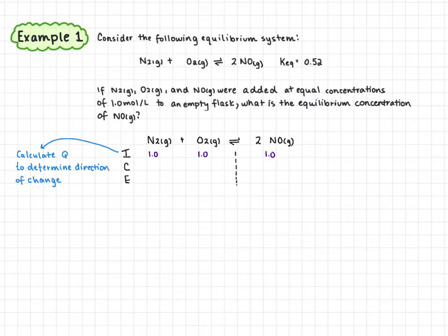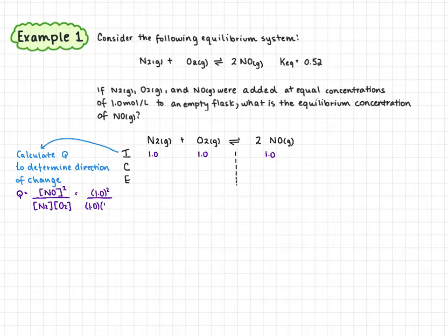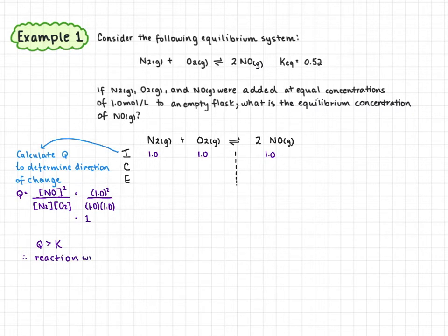Q is going to equal the concentration of nitrogen monoxide squared over the concentration of nitrogen times oxygen. So this is going to equal 1.0 squared over 1 times 1, and we get a Q value of 1. Comparing that to K of 0.52, we see that Q is bigger than K. Therefore, the reaction will shift left to remove some of the product, meaning an increase in the concentration of our reactants and a decrease in the concentration of our product.